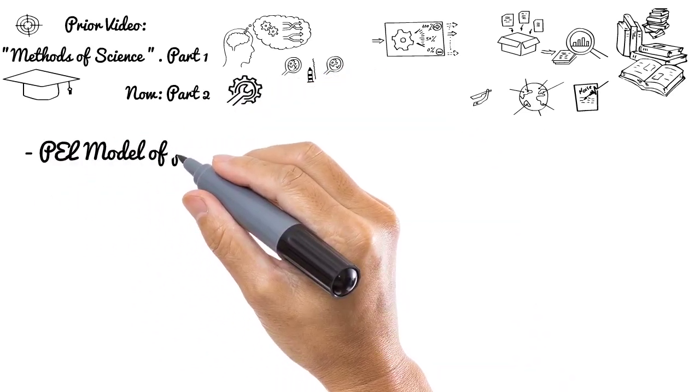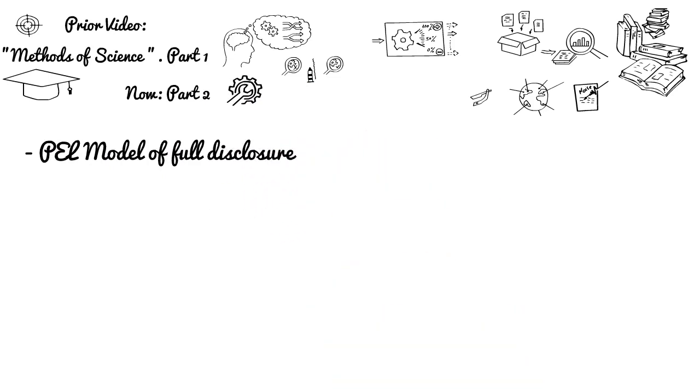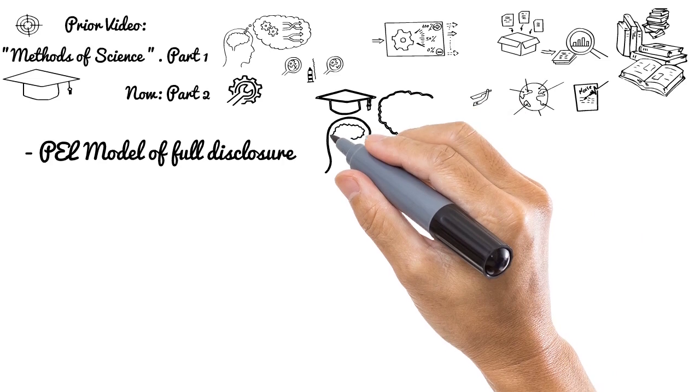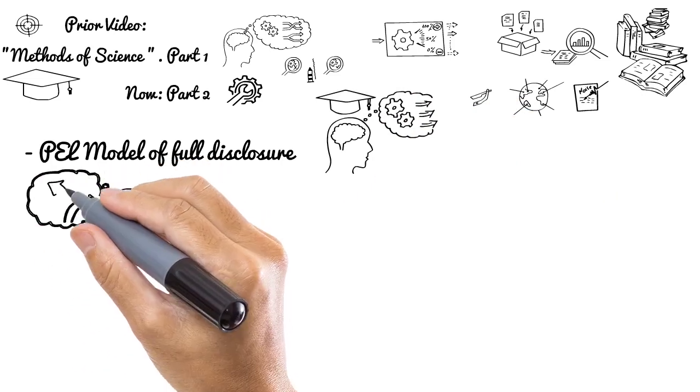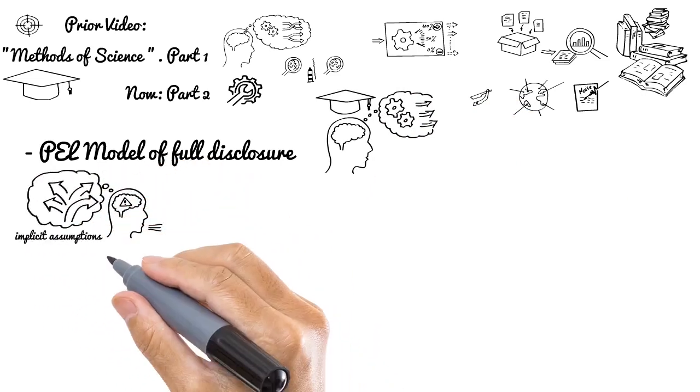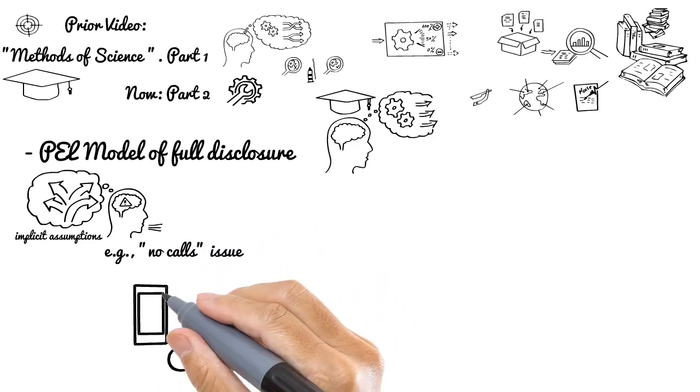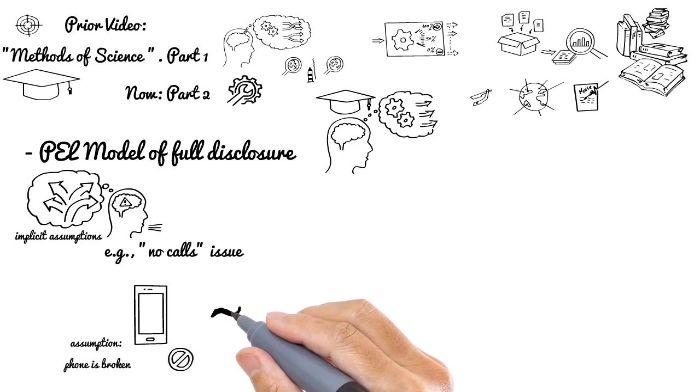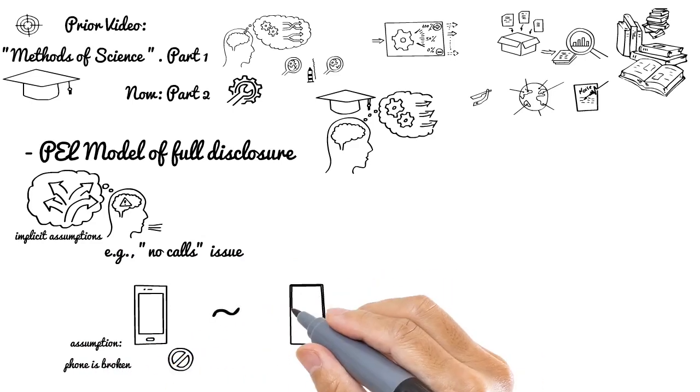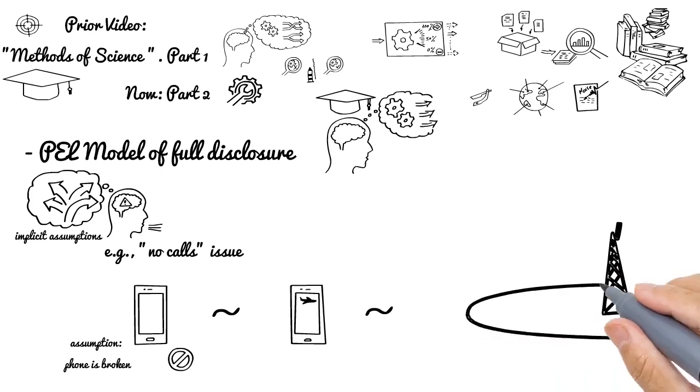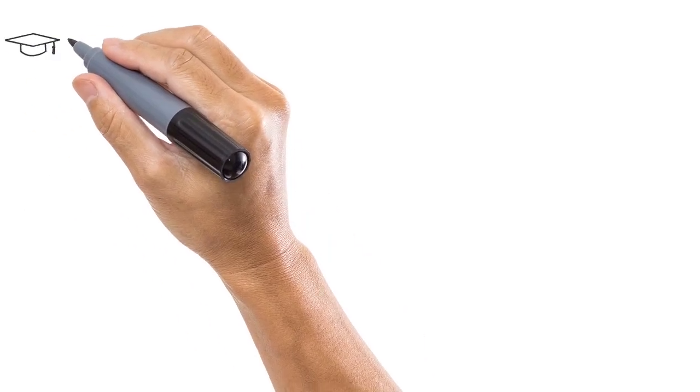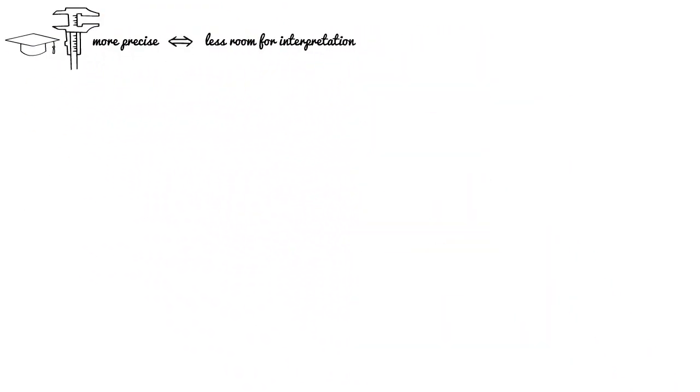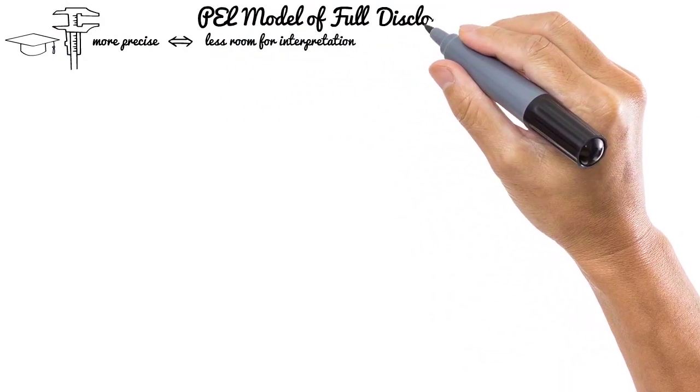And the next topic is the PEL model of full disclosure. It's a very important scientific model for building good logical reasoning. A weakness of human thinking and communicating allows implicit assumptions during discussions. Science needs more precise language to have less room for interpretation, and that can be achieved by the PEL model of full disclosure.